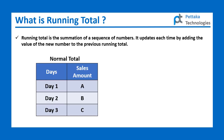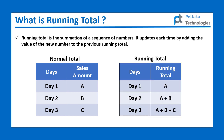In this normal table example we have multiple days and the sales amount for each day. In the running total table example we also have multiple days and sales amount for each day, but the difference is: in the normal table, sales amounts are separated for each day, whereas in the running total table, from day two onwards sales amount is added with the previous day's sales amount.